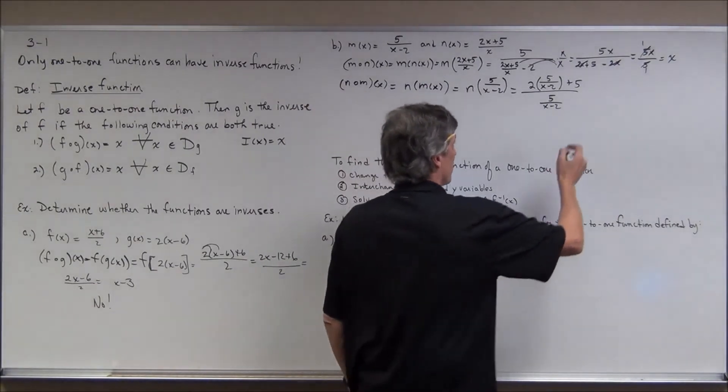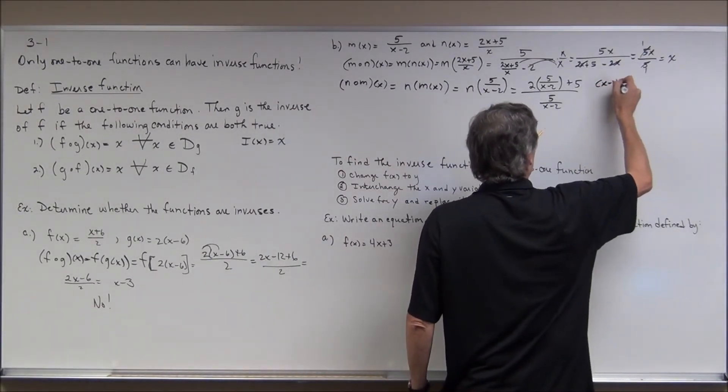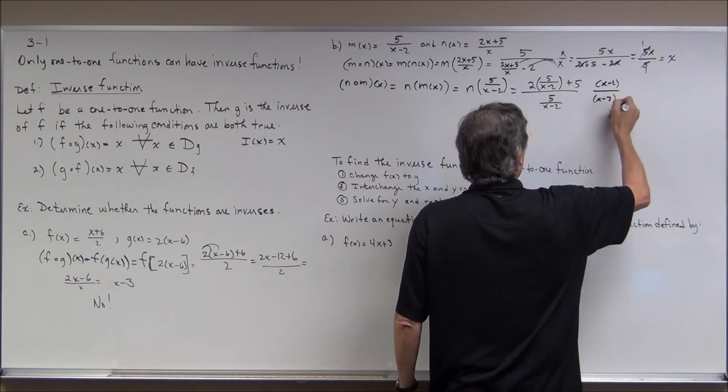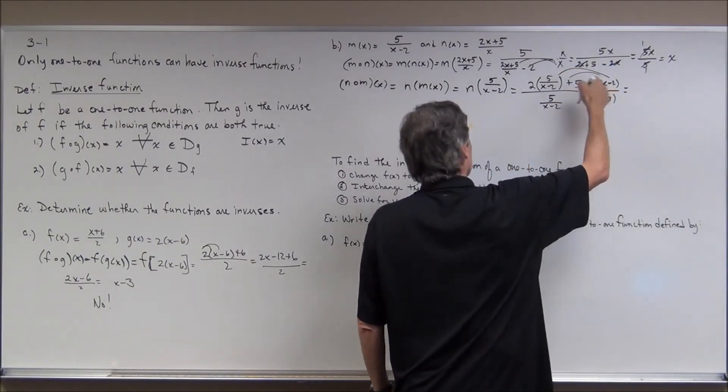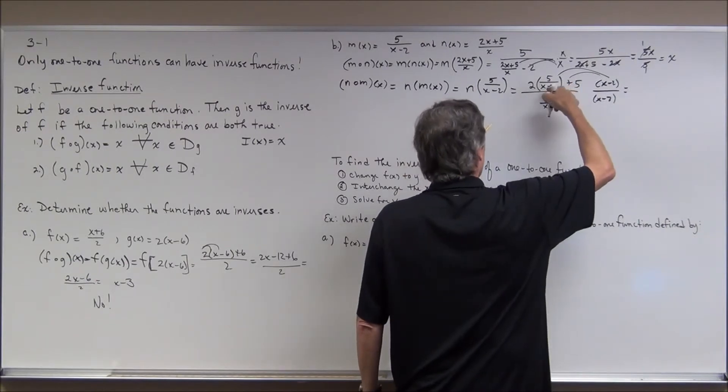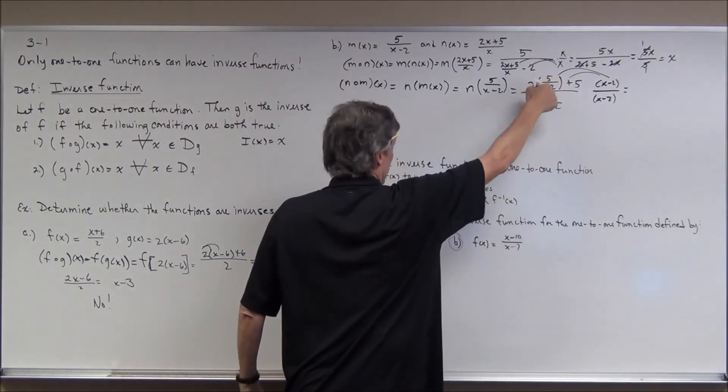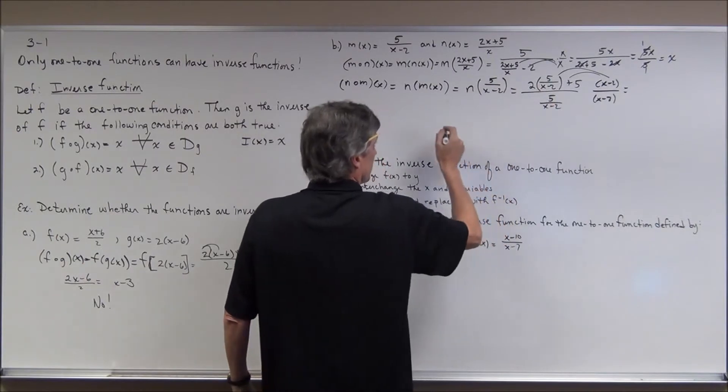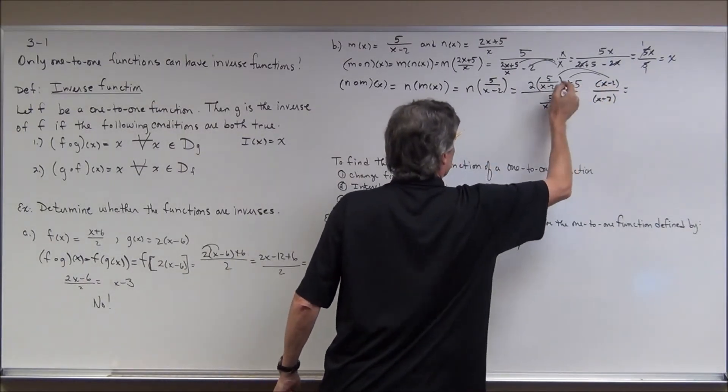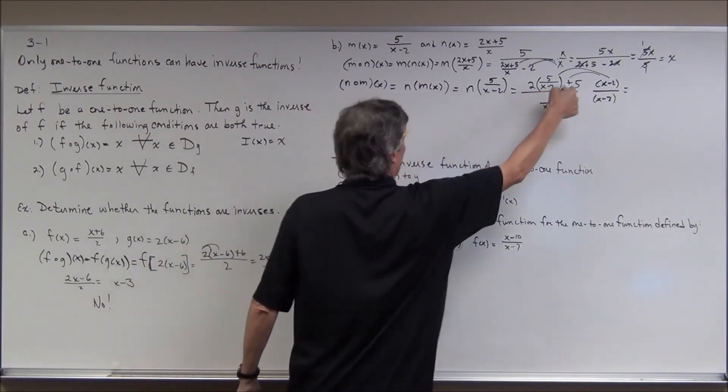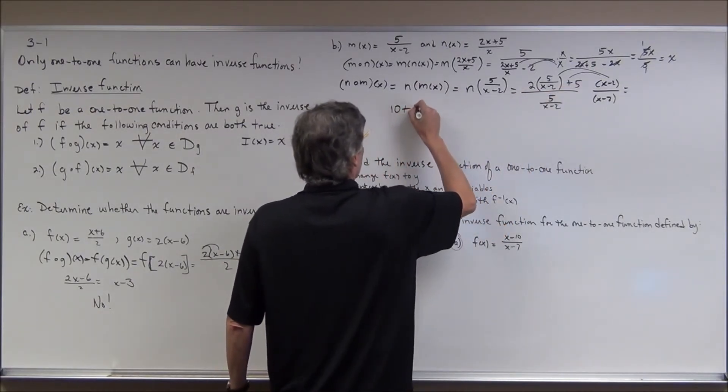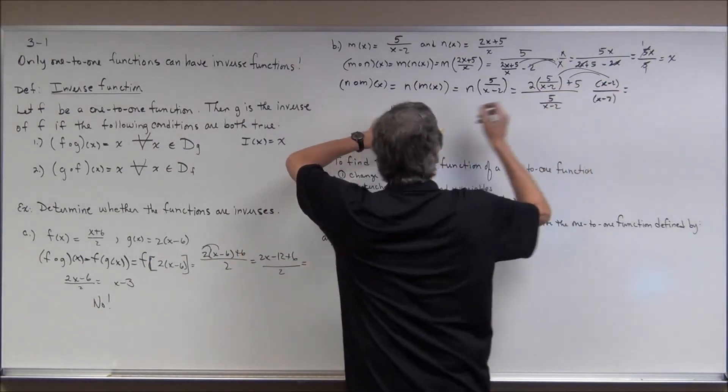Now I'm going to multiply top and bottom by x minus 2 to get rid of the complex fraction. So up here I have to distribute x minus 2 times 2 times the quantity. So 2 times 5, 5 over x minus 2, 2 times 5 is 10. So this is just, well, they're going to cancel the x minus 2, so it's going to give me 10 plus 5 times the quantity of x minus 2.